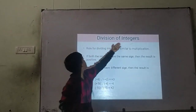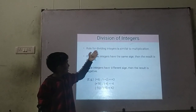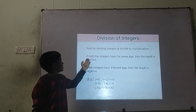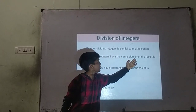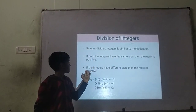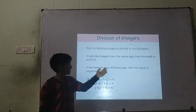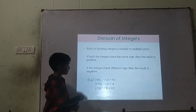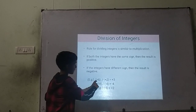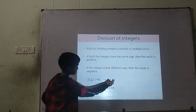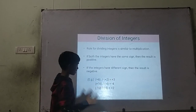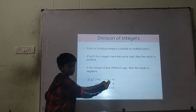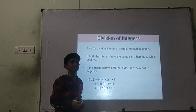Division of integers. The rules of dividing integers are similar to multiplication. If both integers have the same sign, then the result is positive. If the integers have different signs, then the result is negative. For example, positive divided by positive 2: the result will be positive, so the division result is positive.